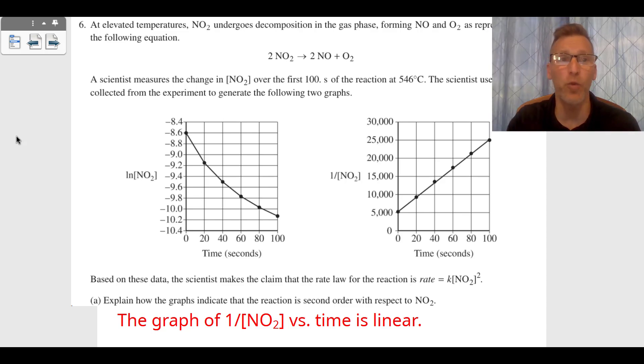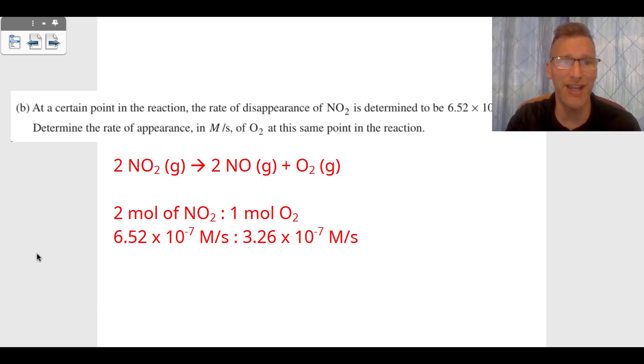Question B is asking about the rate of appearance of O₂. They gave us the rate of disappearance of NO₂, which was 6.52 times 10 to the negative 7 molar per second. We go to our balanced rate ratio. Our balanced reaction: two moles of NO₂ makes one mole of O₂.